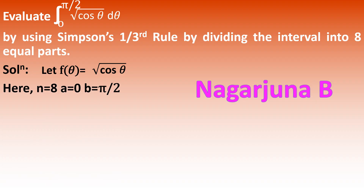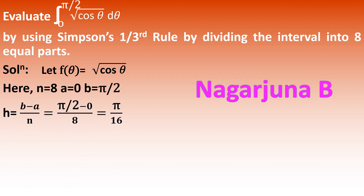So we can write n = 8, a = 0, and b = π/2. Now we need to calculate the value of h, given by the formula h = (b − a)/n = (π/2 − 0)/8 = (π/2)/8 = π/16, because 8 × 2 = 16.